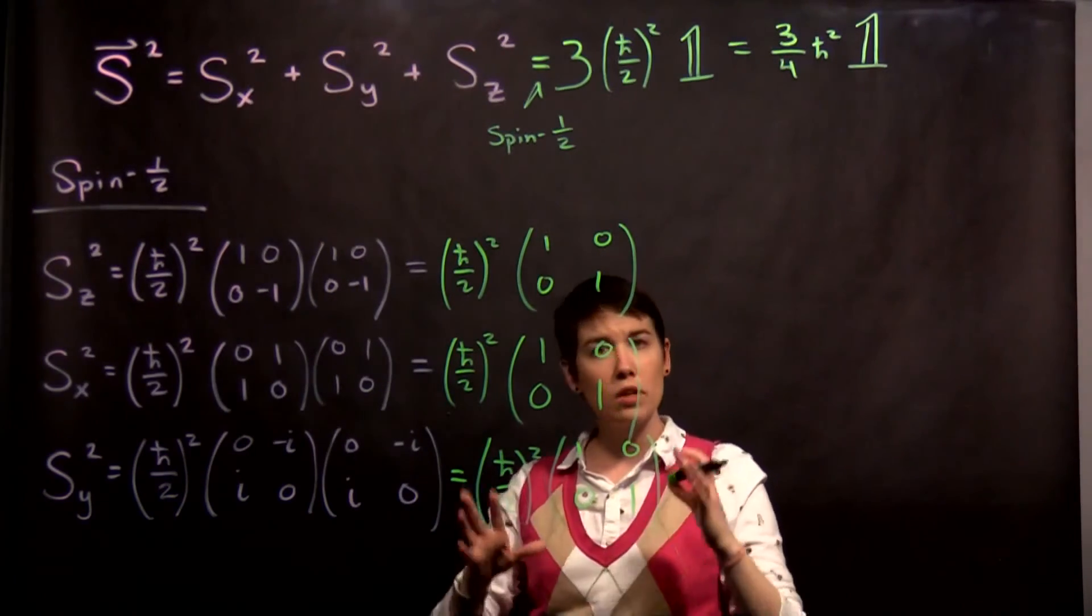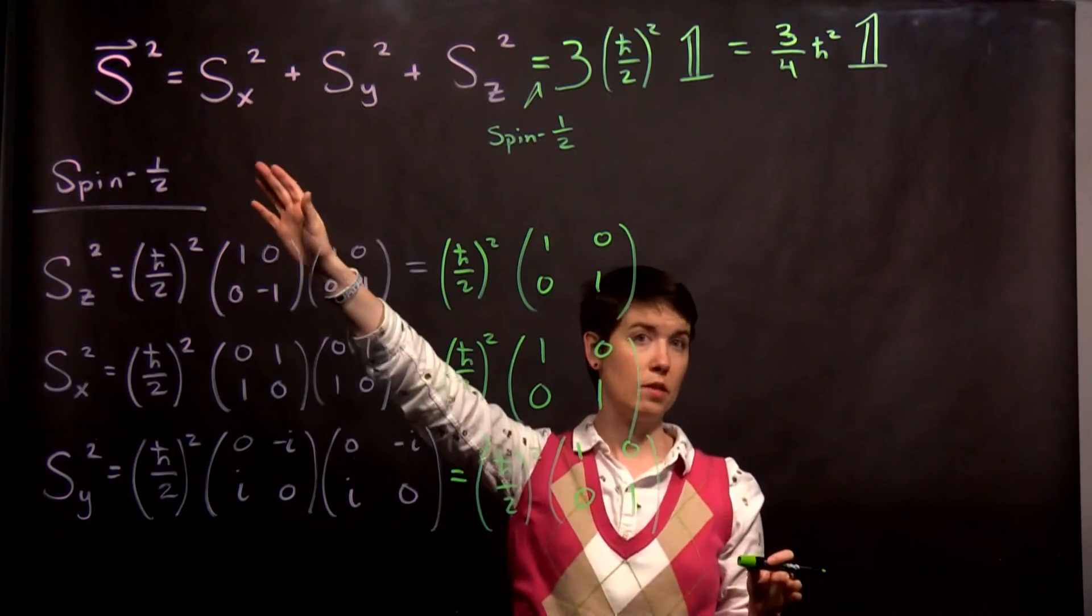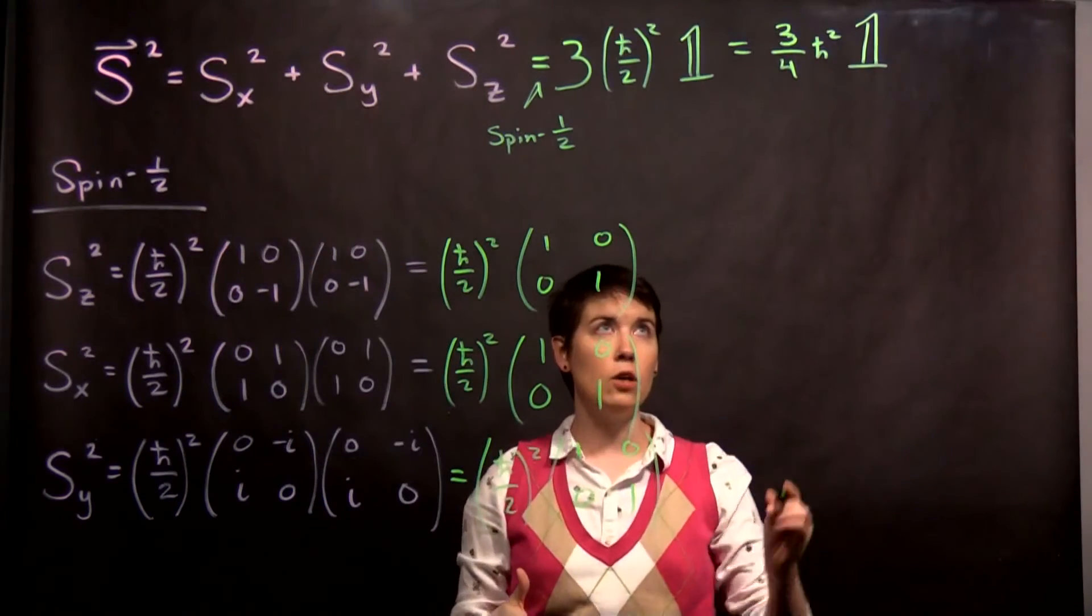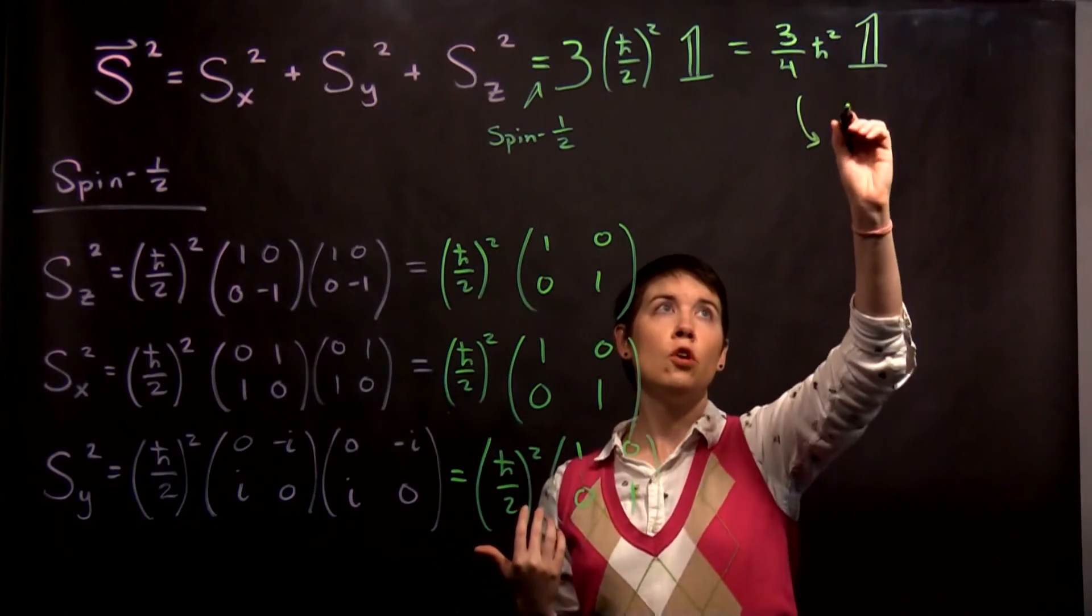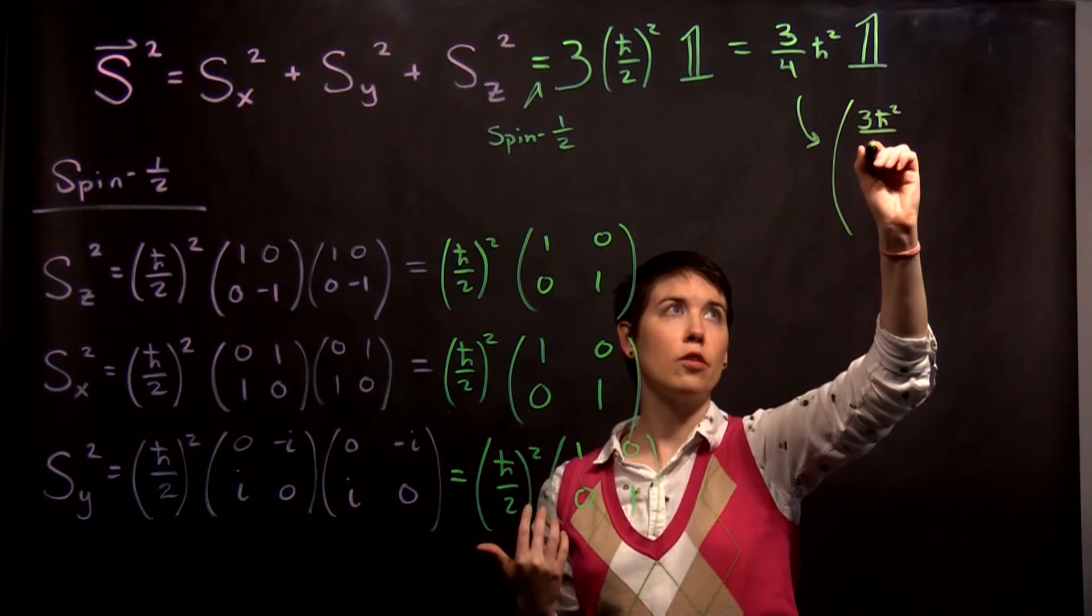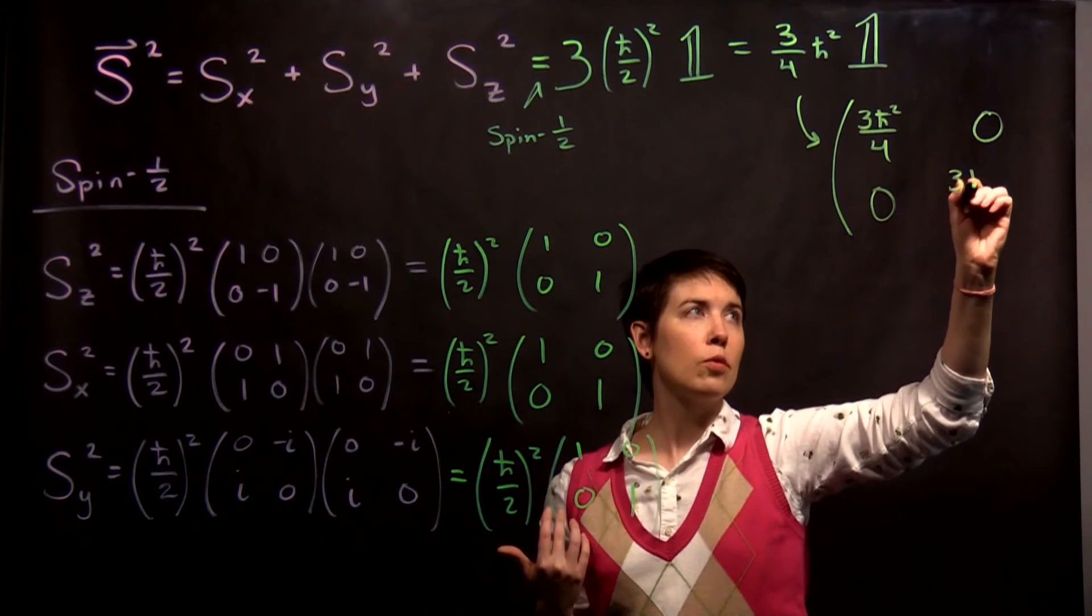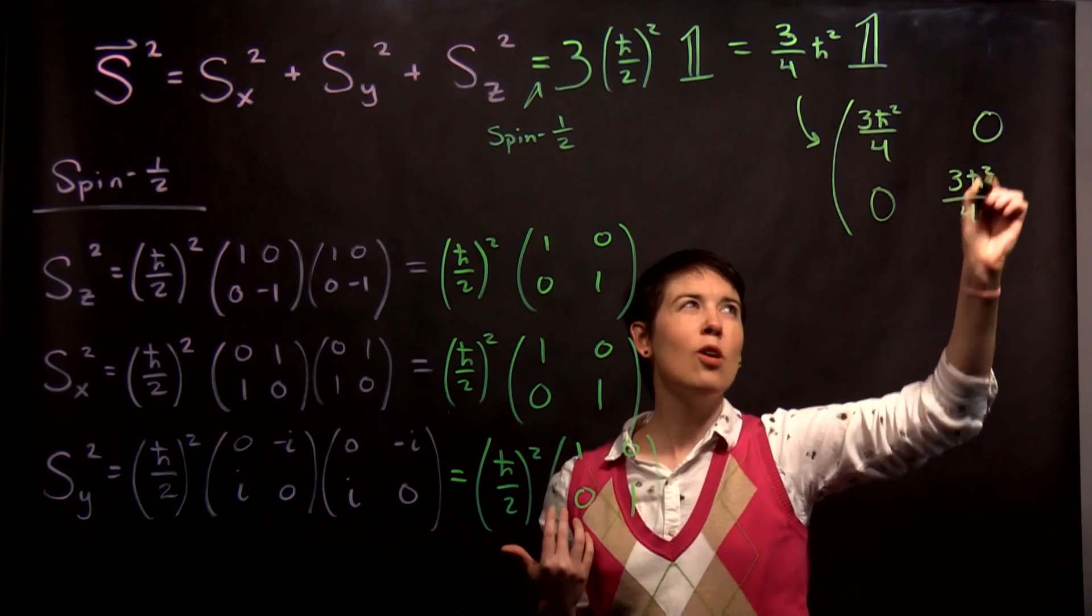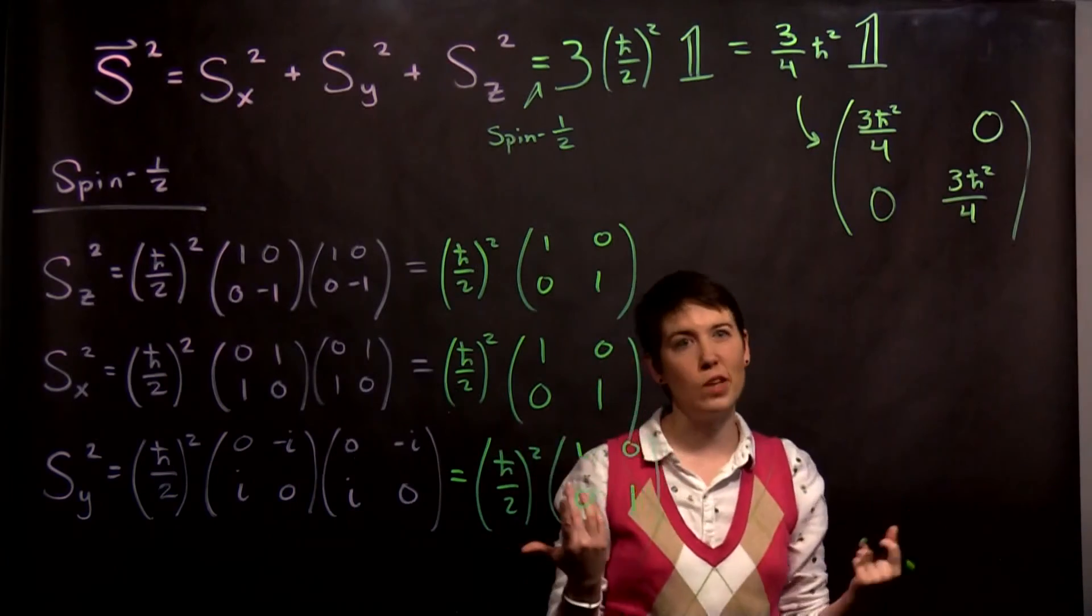So I hope that that is a little bit helpful in just introducing what this is and calculating it out. So another way that we could write this, if you then really wanted to write it as a matrix, you could either write this as explicitly 3 h-bar squared over 4, 0, 0, 3 h-bar squared over 4, or you could just leave these as 1 and 1 and pull that coefficient out front. That's fine too.